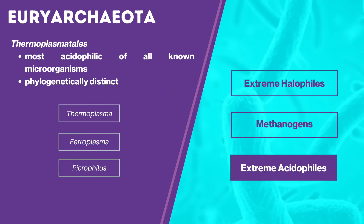The extreme acidophiles include: Thermoplasma, which grows optimally at 55 degrees Celsius and pH 2 and is a facultative aerobe that can grow aerobically or anaerobically by sulfur respiration. Next, Ferroplasma, which is not a thermophile, grows optimally at 35 degrees Celsius, oxidizes ferrous iron into ferric iron for energy, and uses CO2 as a carbon source. Lastly, Picrophilus, the most acidophilic organism, grows optimally at pH 0.7 and can still grow at pH below 0. They stain gram-negatively and reproduce by binary fission, with cells that can be rod-shaped, coccus-shaped, or cup-shaped.